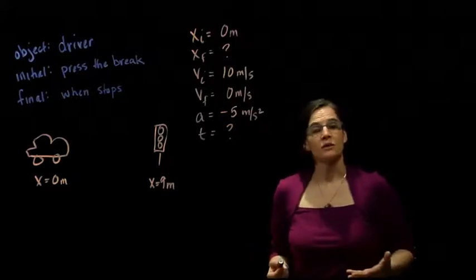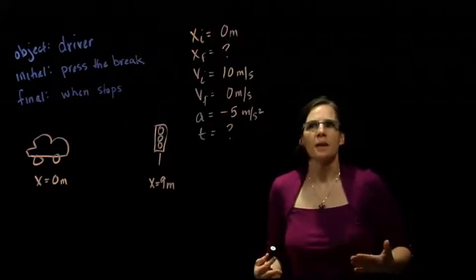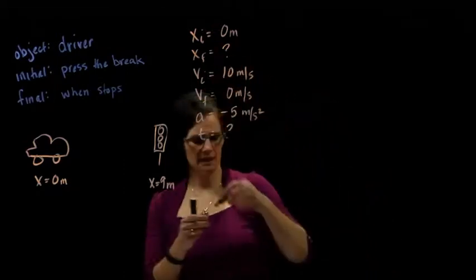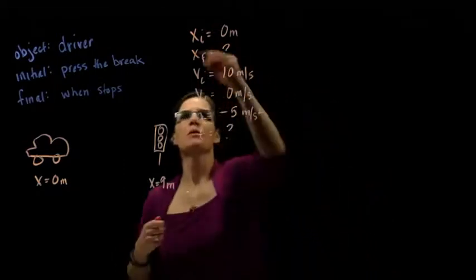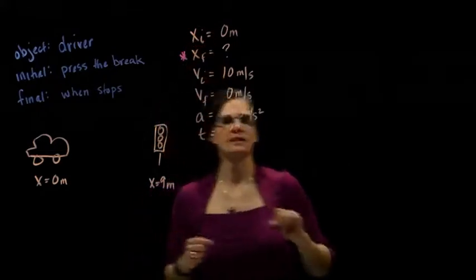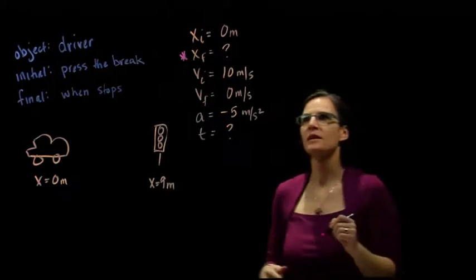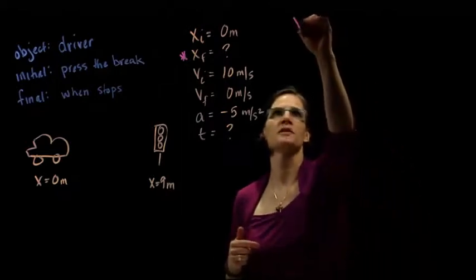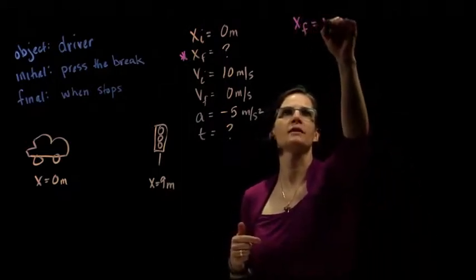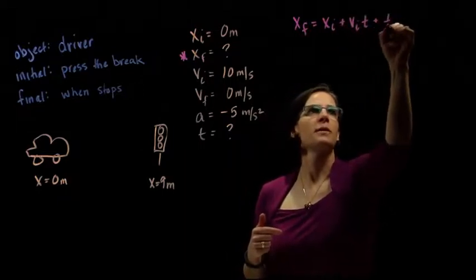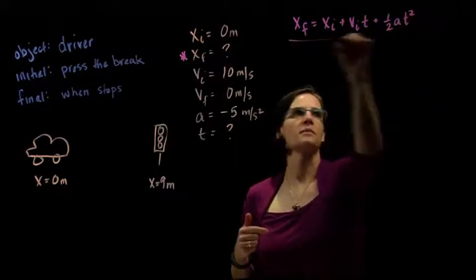Now, we have to decide what's going to answer the question. What answers the, does he stop in time? And that's really about position. What is his final position? Is it less than 9 or is it more than 9? So, our final position is given to us by the equation x final equals x initial plus v initial times t plus one half the acceleration times the time squared.